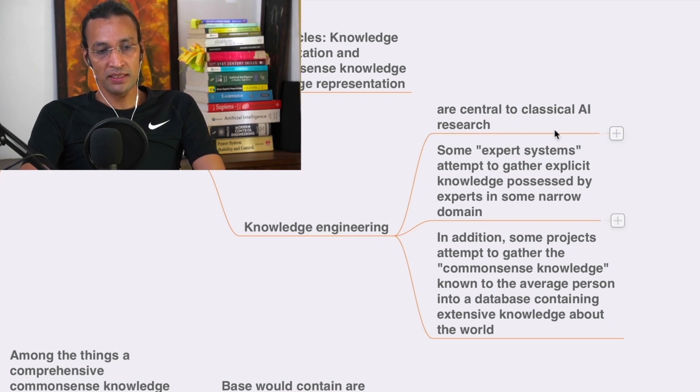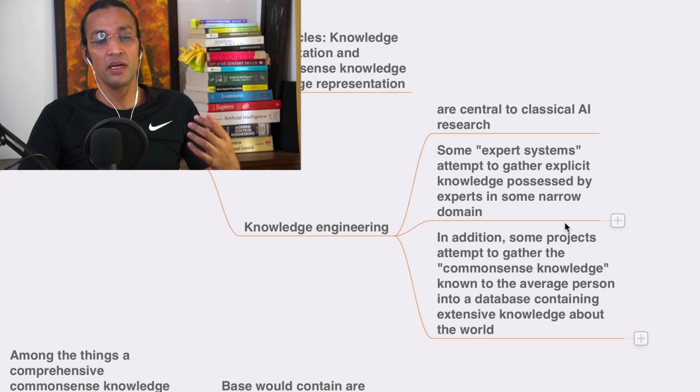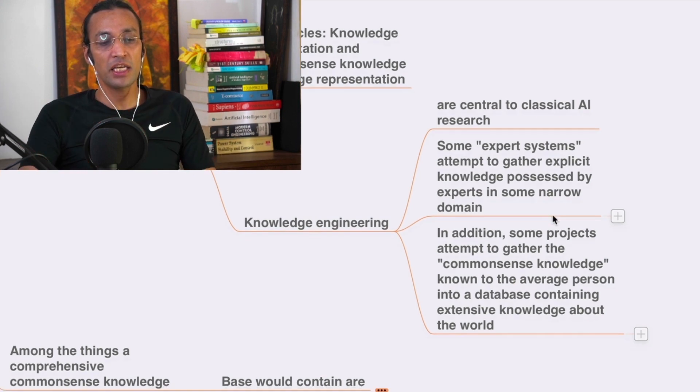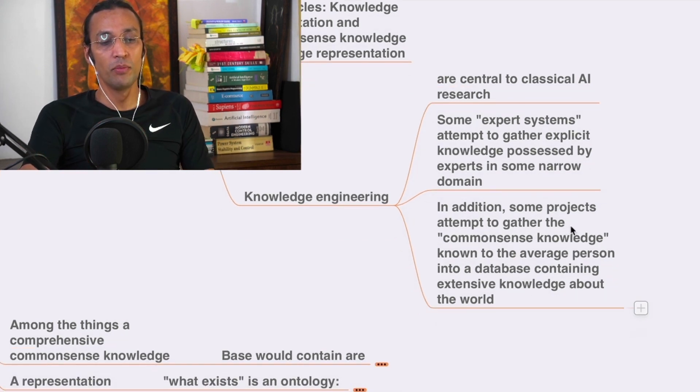Knowledge engineering is central to classical artificial intelligence research. Some expert systems attempted to gather explicit knowledge possessed by experts in some narrow domain. In addition, some projects attempted to gather the commonsense knowledge known to the average person into a database containing extensive knowledge about the world.